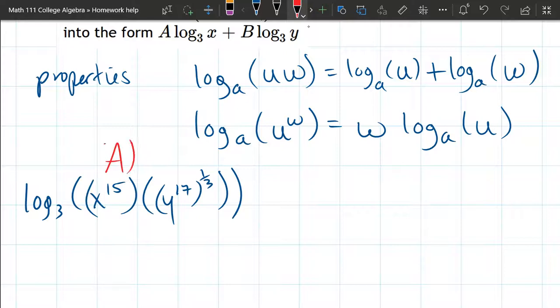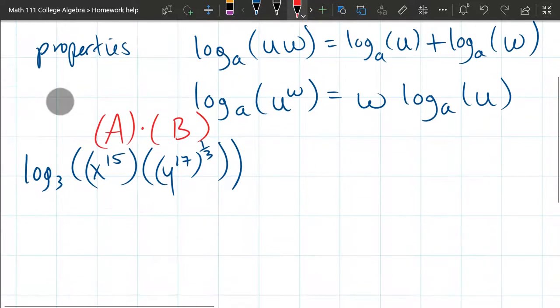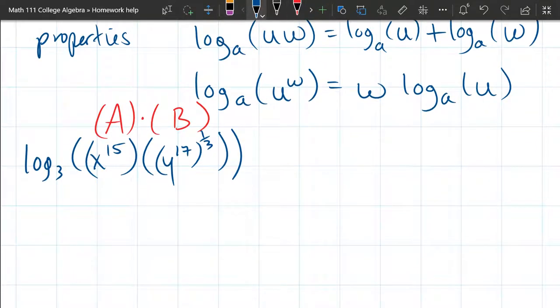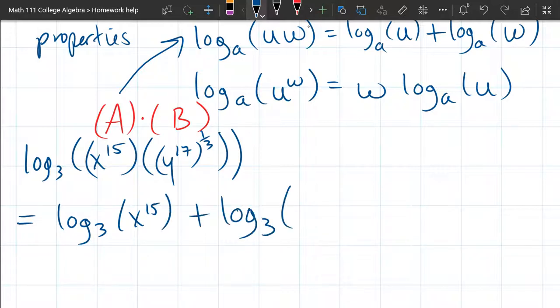We have something times something else. We're not going to go inside the parentheses yet. We're just going to look at this product happening here. So now we're going to use the first rule up top. So we have a product inside is a sum outside. And we have Y to the 17th to the one-third.